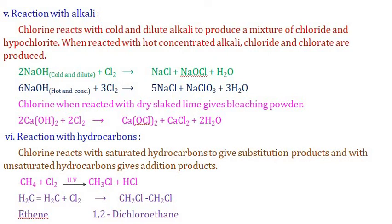Reaction with alkali: chlorine reacts with cold and dilute NaOH to produce a mixture of sodium chloride and sodium hypochlorite (NaOCl) with water. When NaOH is hot and concentrated, chlorine reacts to form sodium chloride, sodium chlorate (NaClO3), and water. Cold conditions give sodium hypochlorite; hot and concentrated conditions give sodium chlorate.